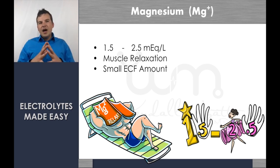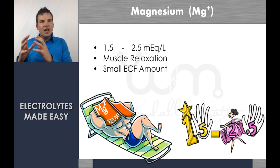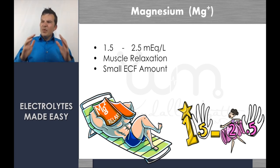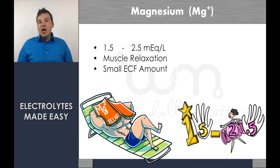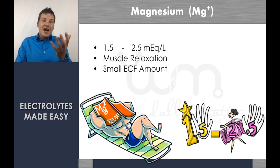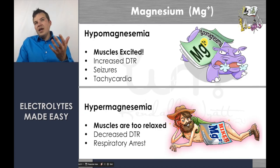Let's talk about magnesium — our magnesium magazine character. The normal lab value range is 1.5–2.5 milliequivalents. The simplified function of magnesium is muscle relaxation — if you have enough or extra magnesium, it's going to be relaxing muscles. It has a relatively small ECF amount, which also means that if we give it IV, it could have a pretty significant impact.